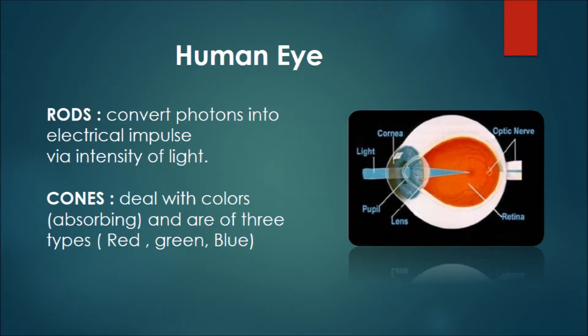Let us see how the human eye works. Light is incident on the cornea and converges to our natural screen called the retina. The optic nerve converts this signal into an electrical signal and feeds it to the brain. Our eye also consists of rods and cones. Rods convert photons into electrical impulses via intensity of light, and cones deal with colors and are of three types: red, green, and blue.